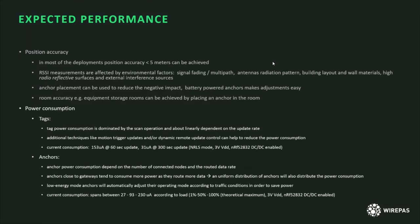For example, during off-work hours you can reduce the update rate because no fast information from the tag is needed, then automatically increase it during working hours. This update rate change is very fast. As a concrete example, the current consumption at a 60-second update rate is about 153 microamps, dropping to 31 microamps at a 300-second update rate. These measurements were taken using non-router long sleep mode on the nRF52832. For battery-powered devices, the DC-DC converter inside the chip should be enabled.